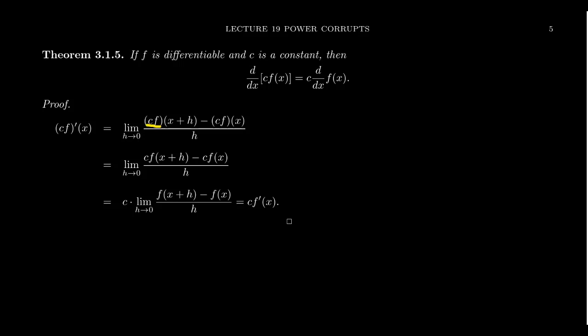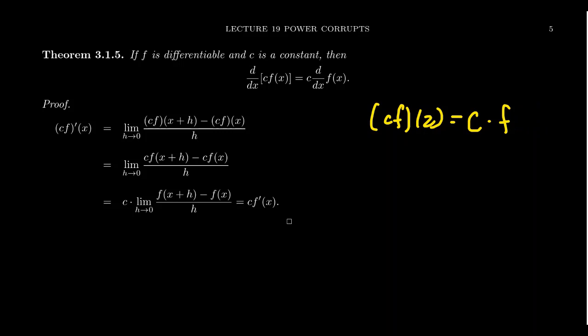What does the function cf of a number even mean? If you take cf and evaluate it at 2, this means you take c times f of 2. You just evaluate the function at the number, then multiply by the constant as an afterthought. So cf of x plus h just means c times f of x plus h, and cf of x just means c times f of x.